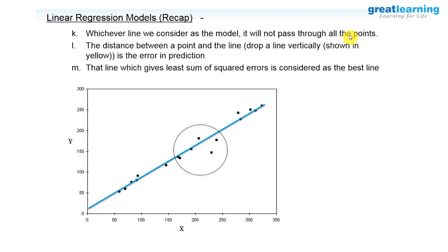What do you mean by errors? Look at this plot. For a given value of X — say 270 — your model says the value of Y should be somewhere around a certain point. The blue line gives the predicted values for a given X value. But the actual value is the black dot. The difference between the line and the black dots is called error.